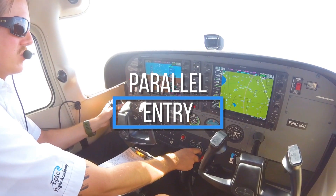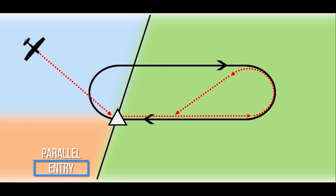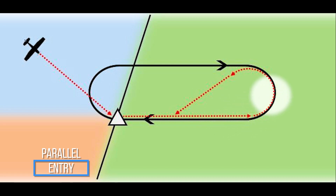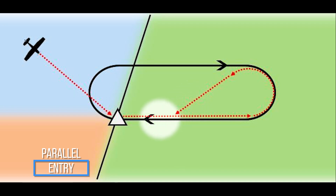Parallel Entry: When approaching the holding fix from anywhere in the blue shaded region, the parallel entry procedure should be conducted. Once the pilot reaches the fix, they would fly the outbound heading away from the fix for one minute. At one minute, the pilot turns opposite of the holding pattern's assigned turn direction more than 180 degrees. The pilot will then intersect the inbound leg and begin hold execution procedures. Once established on the inbound after making the more than 180 degree turn, they should notify air traffic control that they are established in the hold.